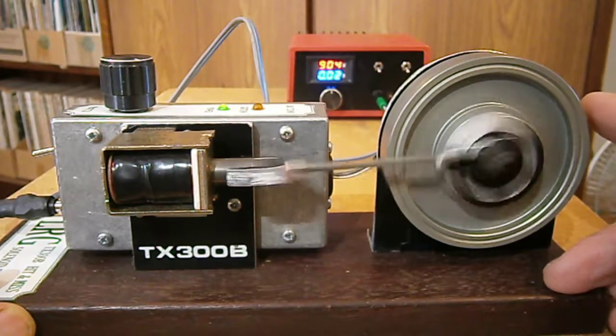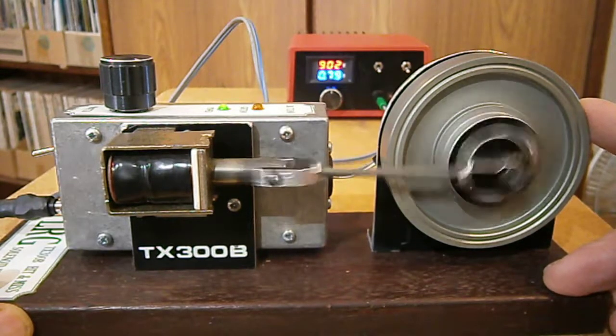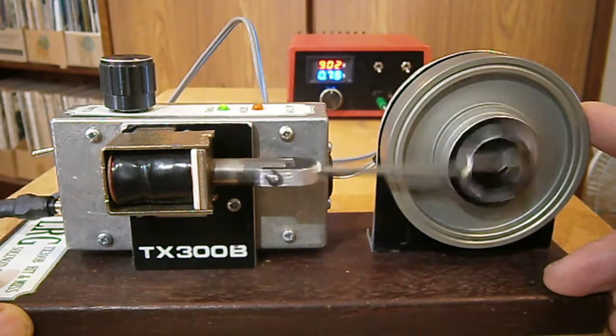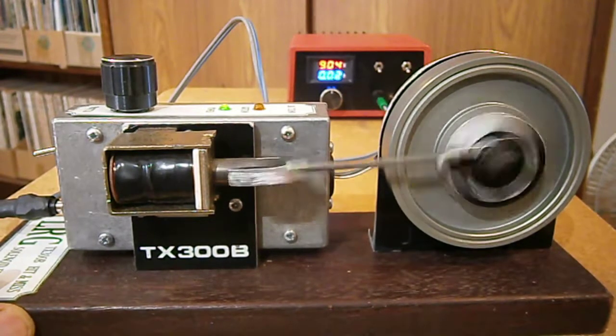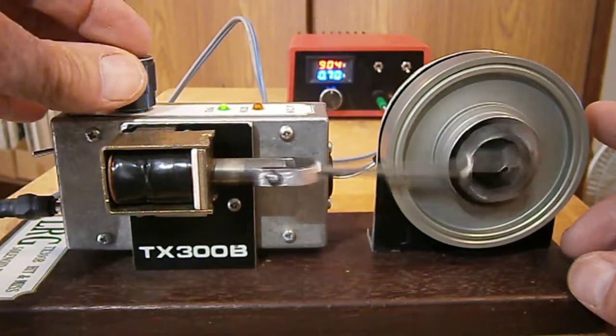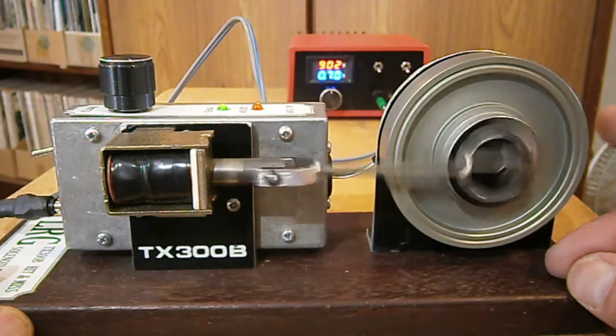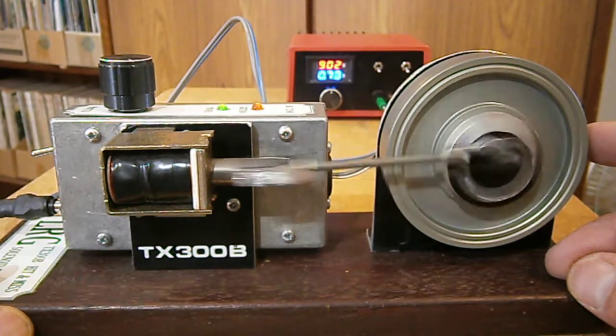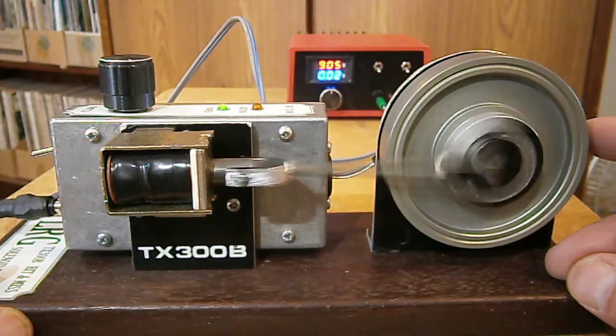Now if I load the flywheel up, you'll see it firing more often. Trying to keep the speed up. If I take the load off, it stops firing so often. So the hit and miss governor works quite well, I think.